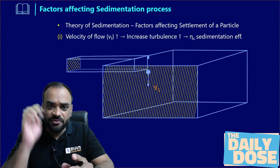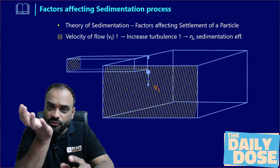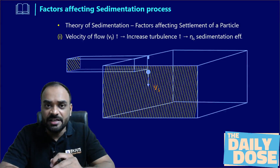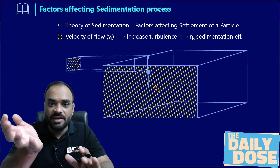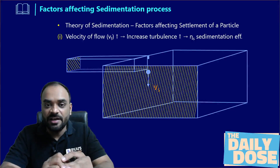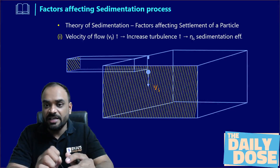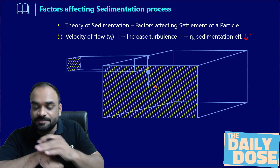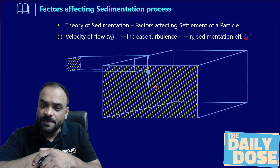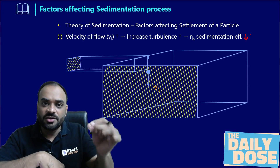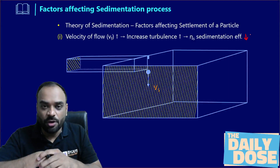If a very high velocity of flow is present, then the turbulence in the water will be very high. If turbulence is very high, then the efficiency of sedimentation will be lesser. Now the question is: how can we resolve this particular problem?